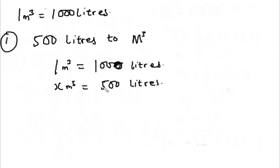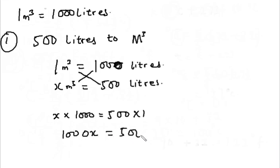So this implies that if you cross multiply, you have x times one thousand equals to five hundred times one. So x times one thousand is one thousand x equals to five hundred.